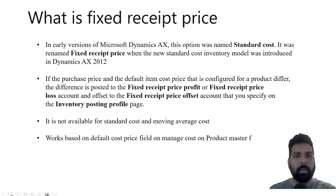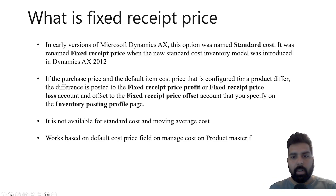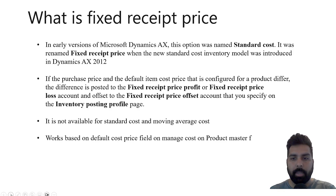So what is fixed receipt price? In summary, in the earlier version of Microsoft Dynamics AX, we did not have the standard cost inventory valuation method. We had only weighted average, FIFO, and LIFO valuation methods. At that point, to use standard cost for any product, you had a checkbox named standard cost. Along with your weighted average, FIFO, or LIFO valuation method, you would enable that checkbox to achieve the standard cost valuation. But later in AX 2012, when standard cost was introduced as a dedicated inventory valuation method, this checkbox was renamed as fixed receipt price. And it behaves exactly as the standard cost valuation method in the system.